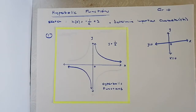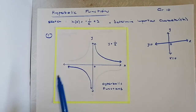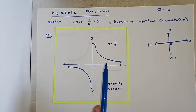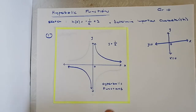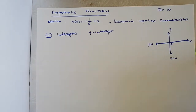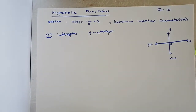Hello everyone, welcome to Academic Coordinates. In this video we're going to sketch a hyperbolic graph — h(x) equals negative 1 divided by x plus 2. Let's just dive right into it.